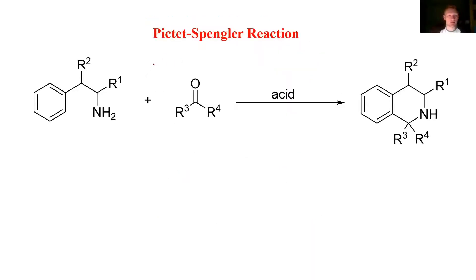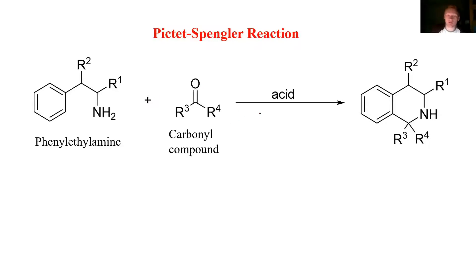Here is the Pictet-Spengler reaction, where we take a phenylethylamine substituted in any way and react it with a carbonyl compound under acidic conditions to make the 1,2,3,4-tetrahydroisoquinoline.